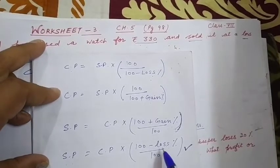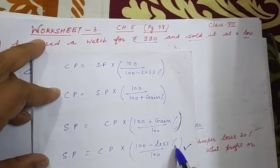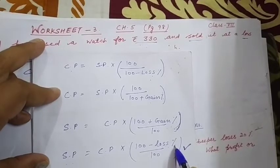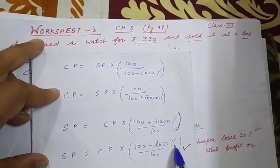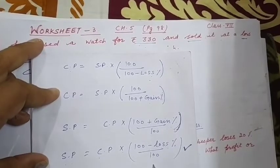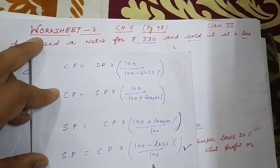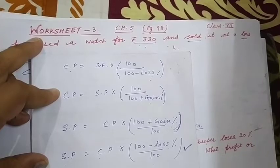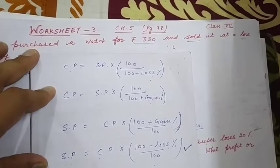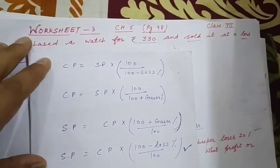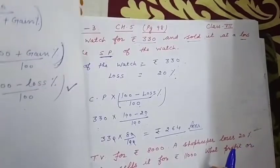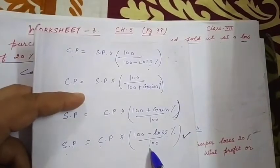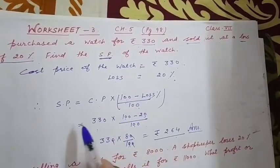Loss दिया हुआ है तो formula आएगा: SP = Cost Price × (100 − Loss%) ÷ 100। यह formula आपने revise करके learn करना है और सोचना है कि कब कौन सा formula apply होगा।